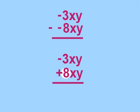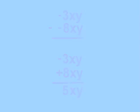Now, if we subtract 3 from 8, we get 5. And then we drop down our xy. 5xy is our answer. Way to go, Dojo Dog.